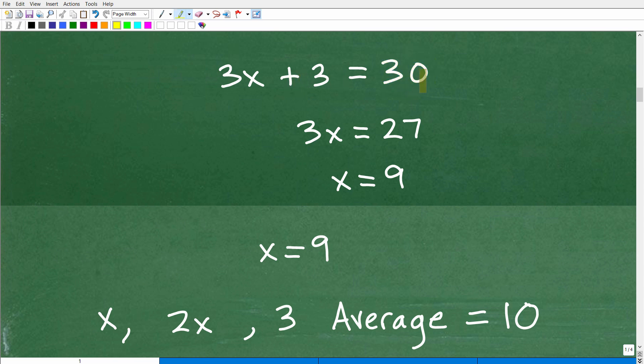All right, so we have 3x plus 3 is equal to 30. What's my next move? Well, I'm going to subtract 3 from both sides of the equation. And that's going to give me 3x is equal to 27. Now I'm going to solve for x by dividing both sides of the equation by 3. So x is equal to 9. That is our answer.